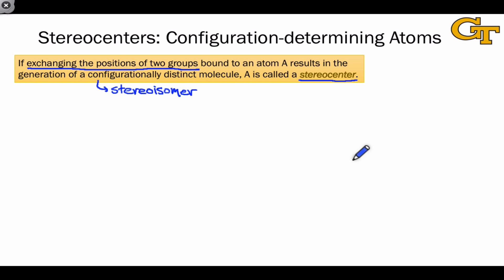But I want to emphasize before we look at examples that this is the formal definition and it suggests a fail-safe method for identifying a stereocenter that involves exchanging the positions of two groups and seeing if the molecule generated is a stereoisomer of the original or not.